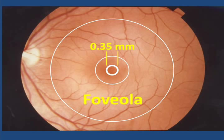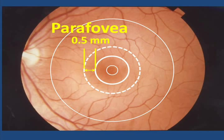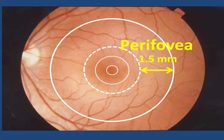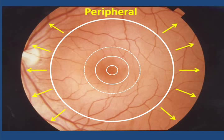The fovea, and especially the foveola, pick up the finest details of central vision. The outer region around the fovea centralis can be split into two regions: the parafovea, which has a width of about half a millimeter, and the perifovea, which has a width of about a millimeter and a half. Everything outside of this central area is said to be the peripheral retina.